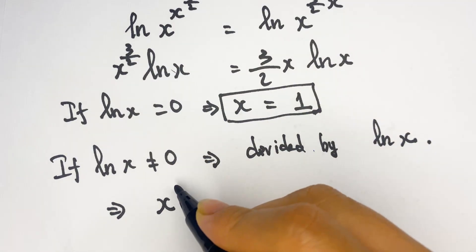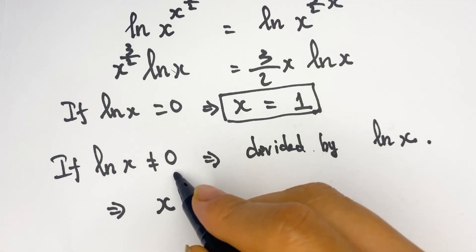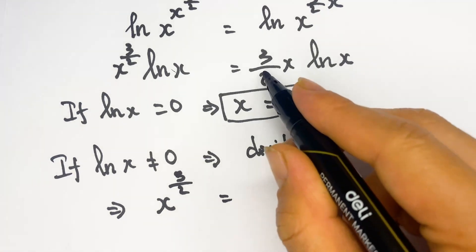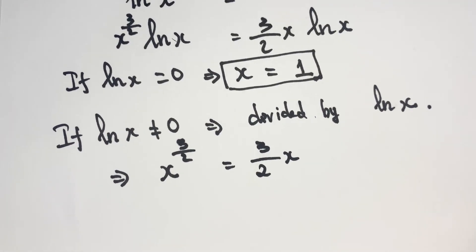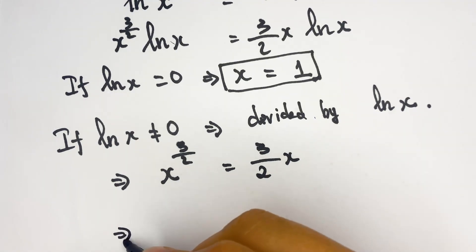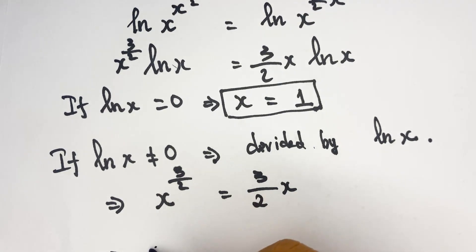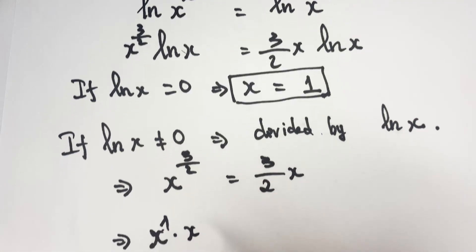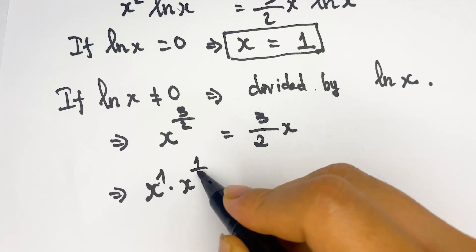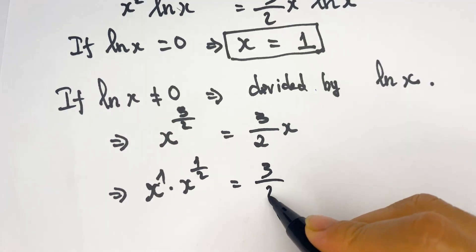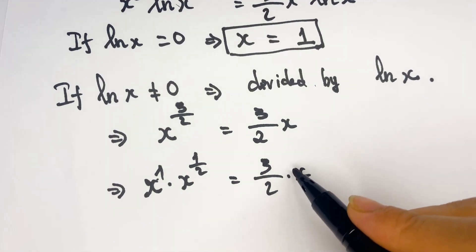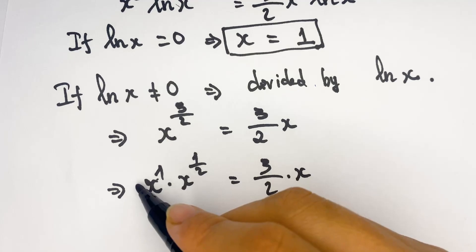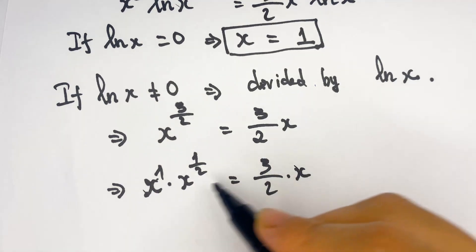We then have x^(3/2) equals (3/2)·x, which we can write as x^1 · x^(1/2) equals (3/2)·x. Dividing both sides by x.